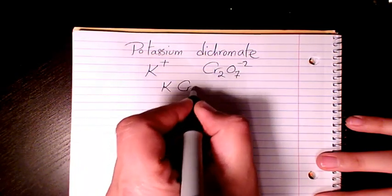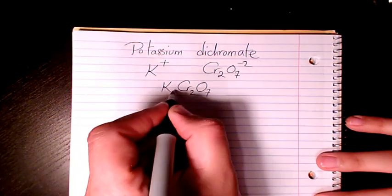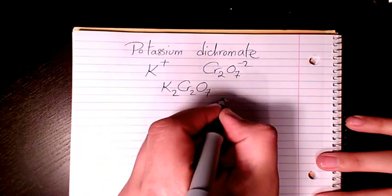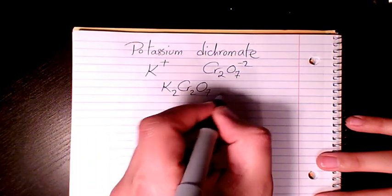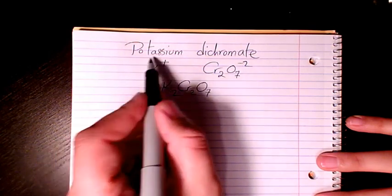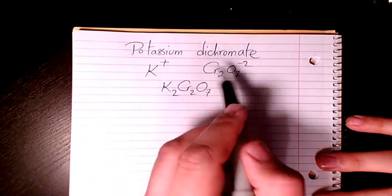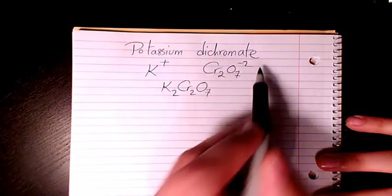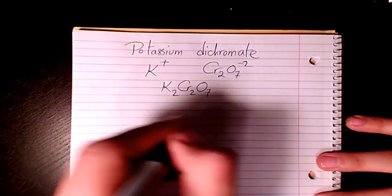So when you write it as a compound, the two is gonna sit here and here we have one so it's gonna be K2. We don't write the one. So K2Cr2O7 is potassium dichromate. Dichromate is Cr2O7 2-. So that's the molecular formula.